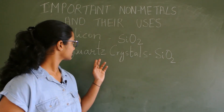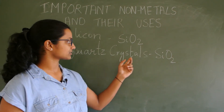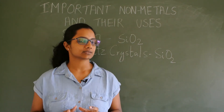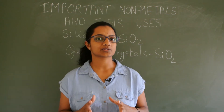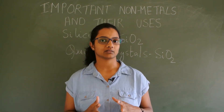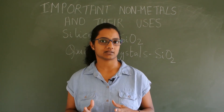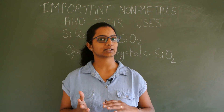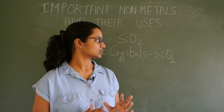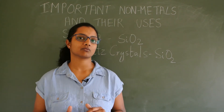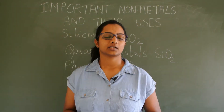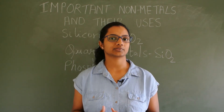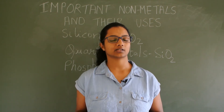Quartz crystals, which is SiO₂, oscillate and vibrate at a very steady rate, and that is why they are used in watches. Silicon is also used in making cement, glass, waterproof cloth and insulation materials.